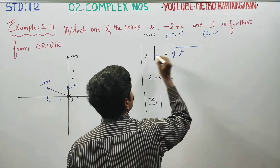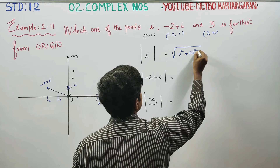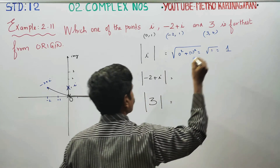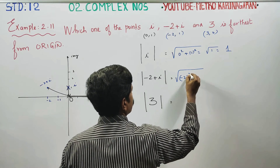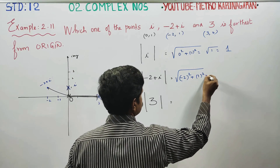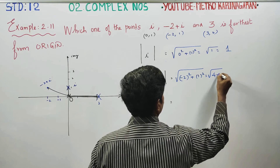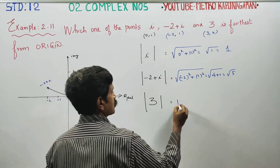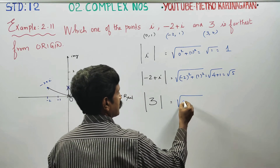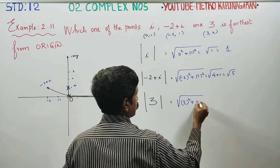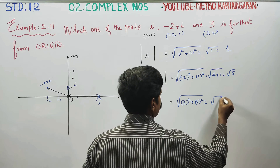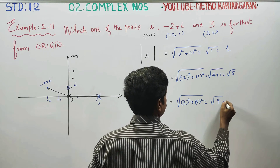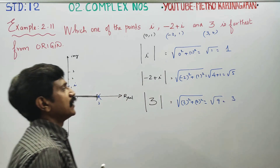The modulus of i: square root of real part squared plus imaginary part squared, which is square root of 0 squared plus 1 squared, giving 1. The modulus of minus 2 plus i: square root of 2 squared plus 1 squared, which is square root of 4 plus 1, giving square root of 5. The modulus of 3: square root of 3 squared plus 0 squared, giving square root of 9, which is 3.